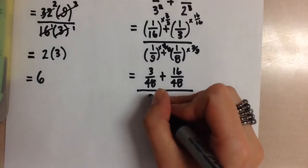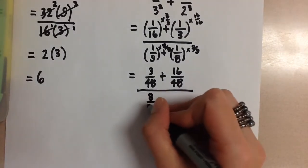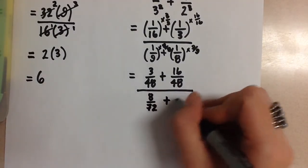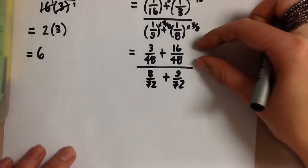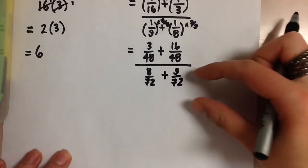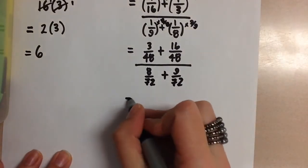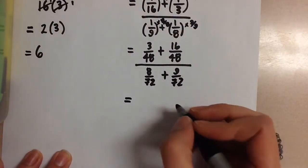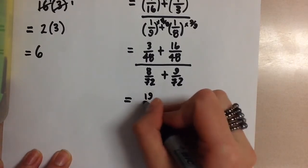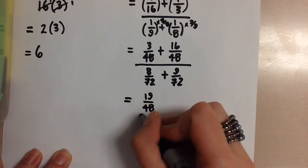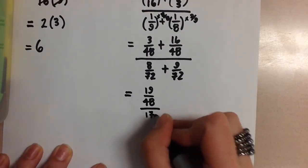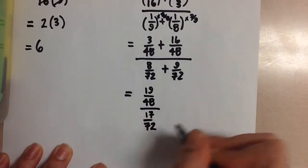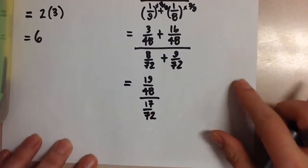On the bottom then we're going to get 8 over 72 plus 9 over 72. Now we're going to go ahead and add the top portion together and add the bottom portion together. So we're going to have 19 over 48 all over 17 over 72. So what we have here is a fraction divided by a fraction.